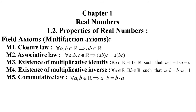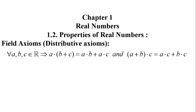Multiplication also satisfies the commutative law: a·b = b·a. Now the field distributive axioms: for all a, b, c belonging to R, a·(b + c) = a·b + a·c, and (a + b)·c = a·c + b·c. This is known as the field distributive axioms.